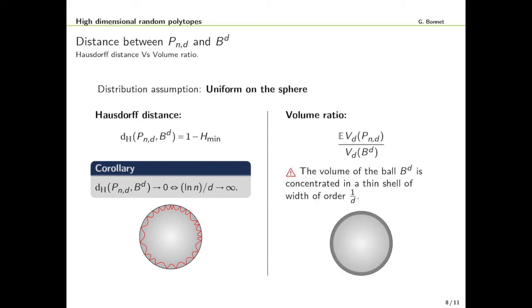For the volume ratio one has to be careful because you can be close in Hausdorff distance but still have a small volume ratio. This comes from a well-known factor of high-dimensional geometry which is the thin shell phenomenon. It says that the volume of the ball B_d is concentrated in a thin shell of width of order 1/d. That means if you remove this thin shell then what remains has a volume which is significantly smaller. In particular if the Hausdorff distance goes to zero but slower than 1/d then you might lose too much volume.